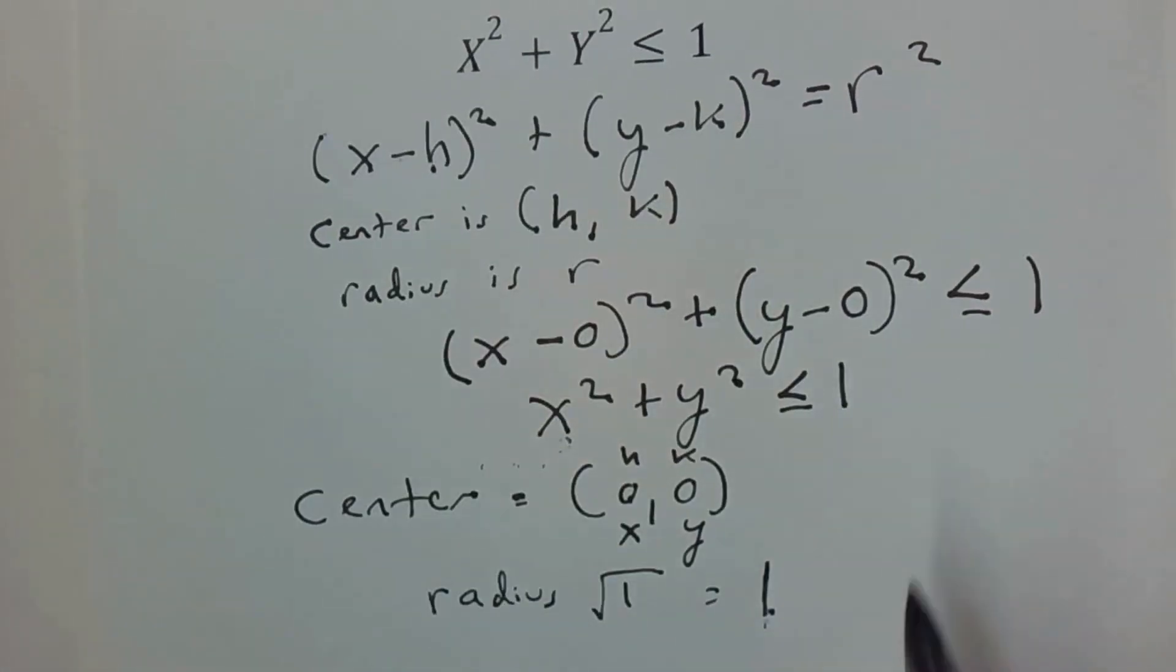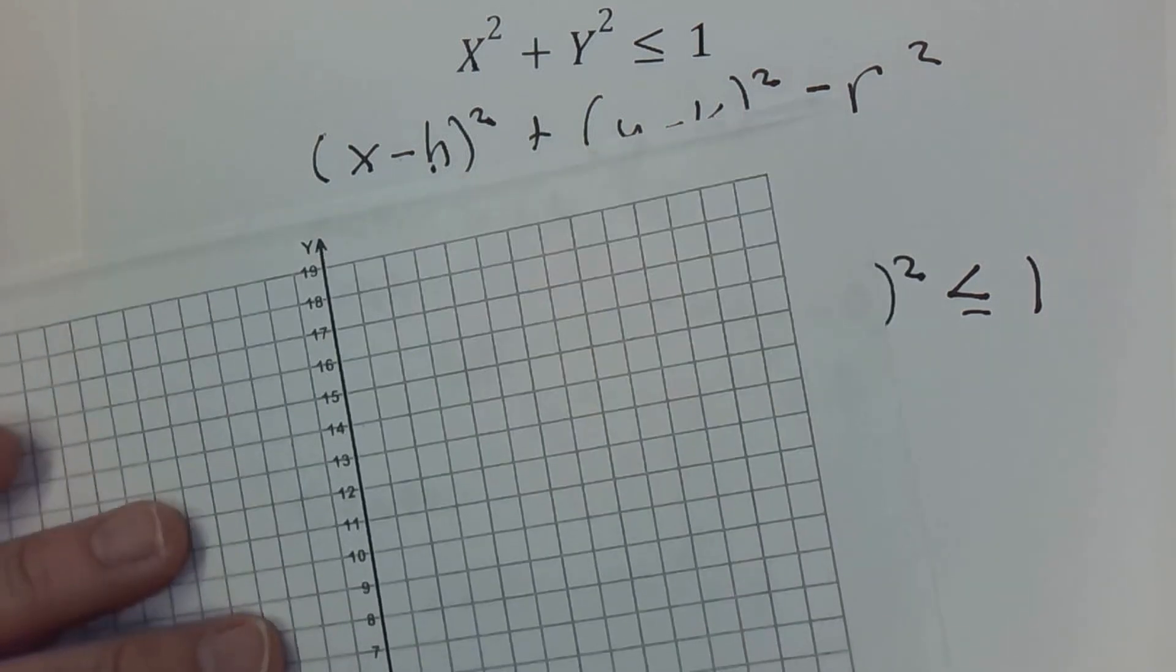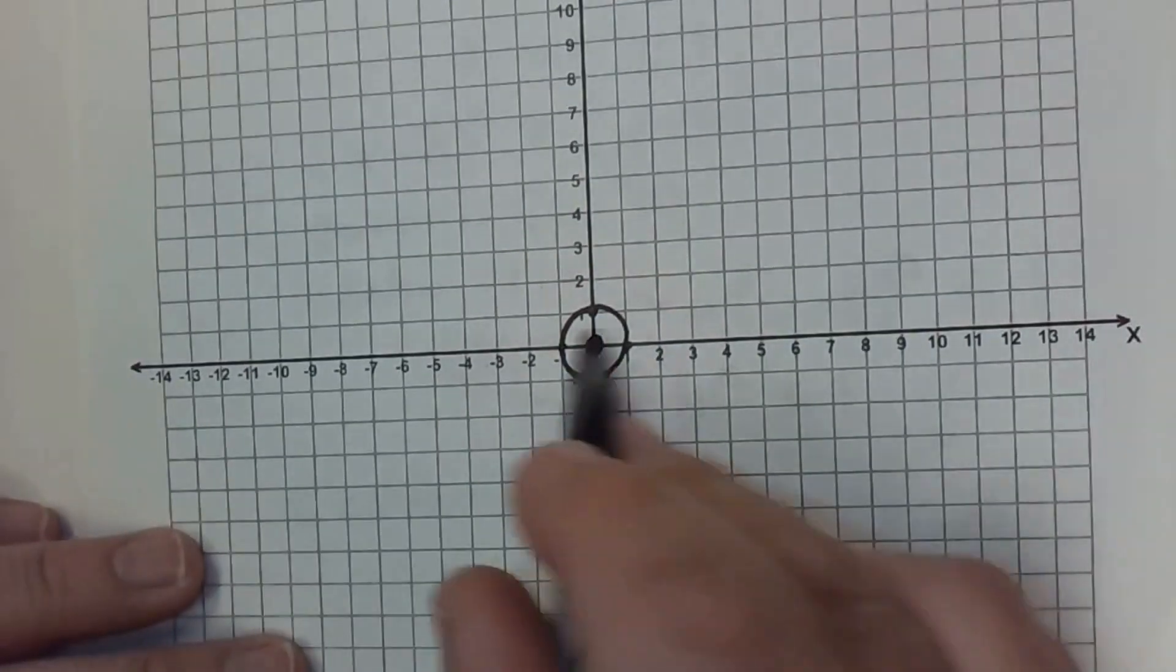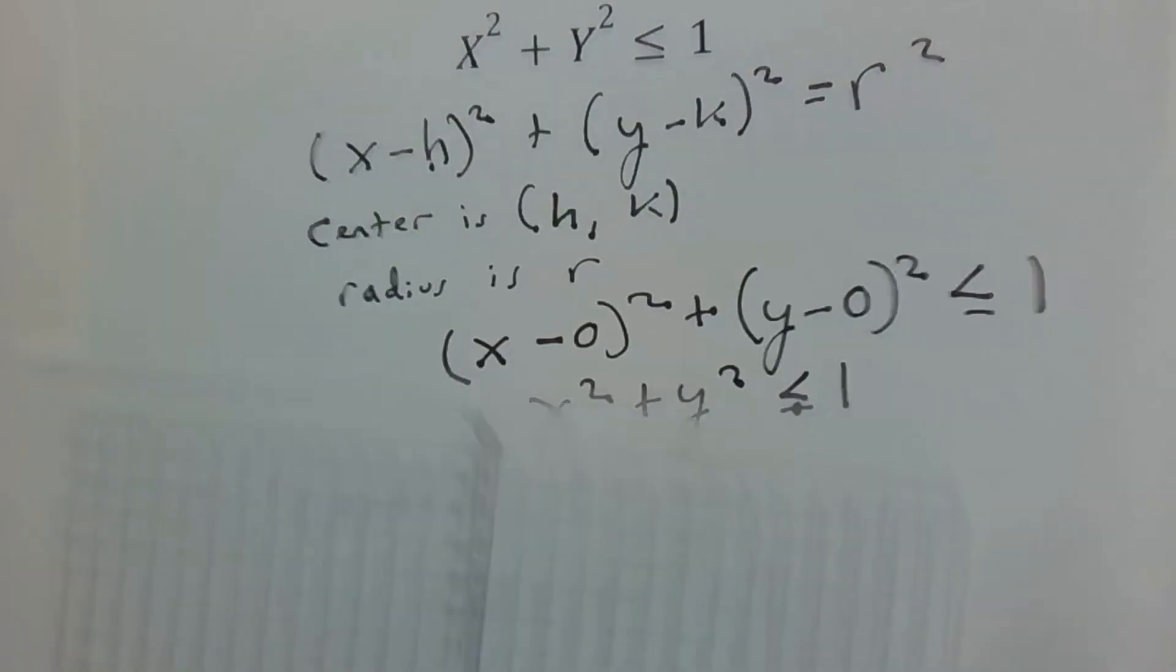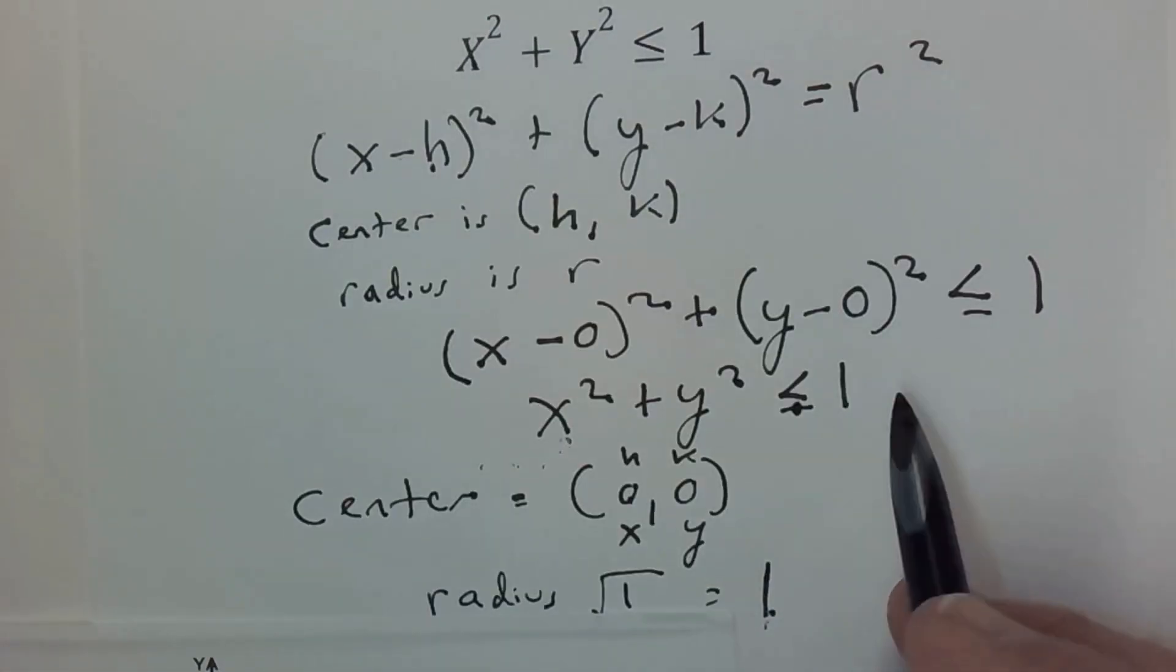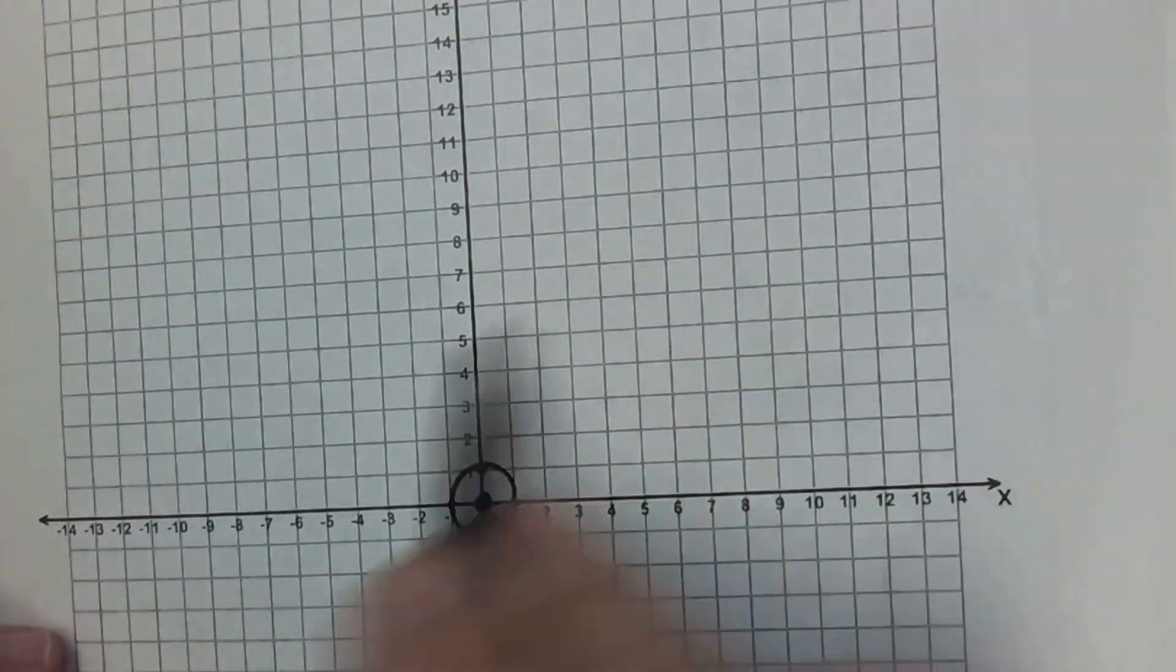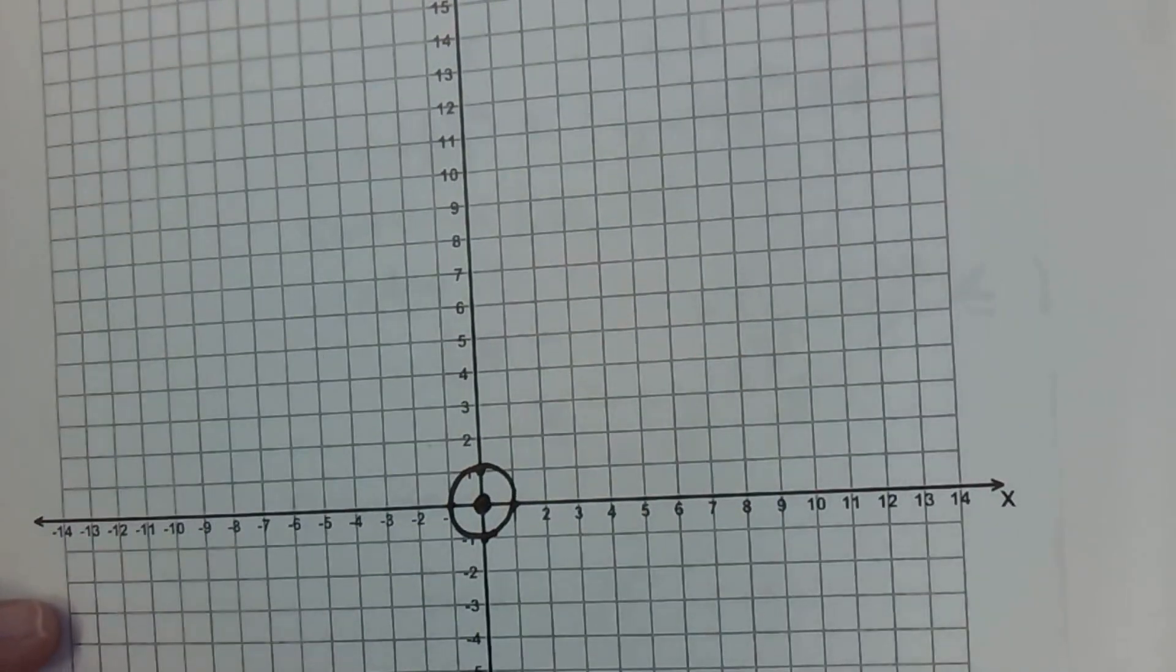However, if you notice, we didn't just have an equals 1, we had a less than and equals to 1. So this is an inequality. If it was just equal 1, it would be just a solid circle. But in this case, it's less than or equal to 1, so we need to find out whether our shading is going to be the outside of the circle or the inside of the circle.